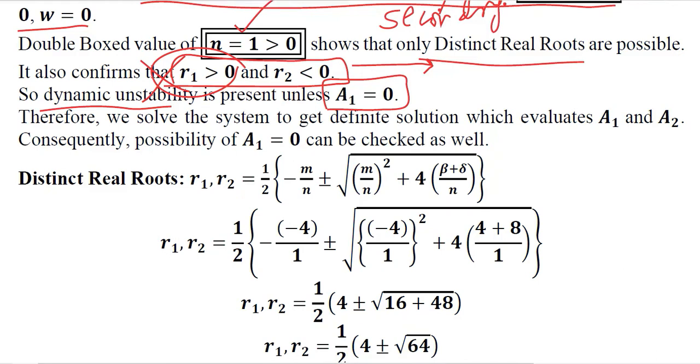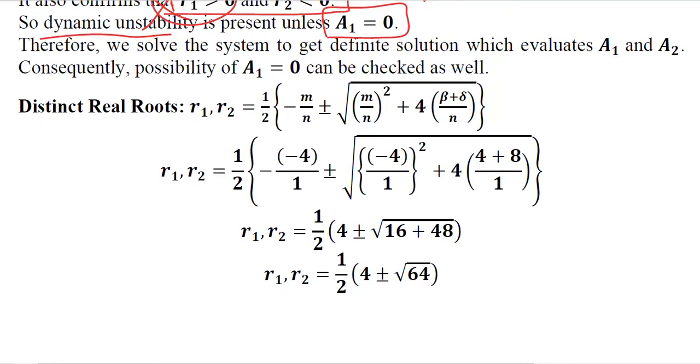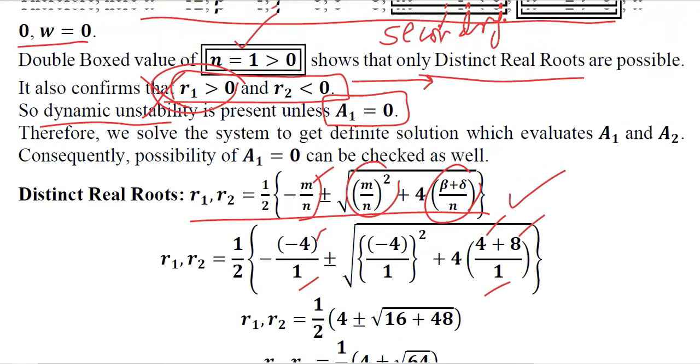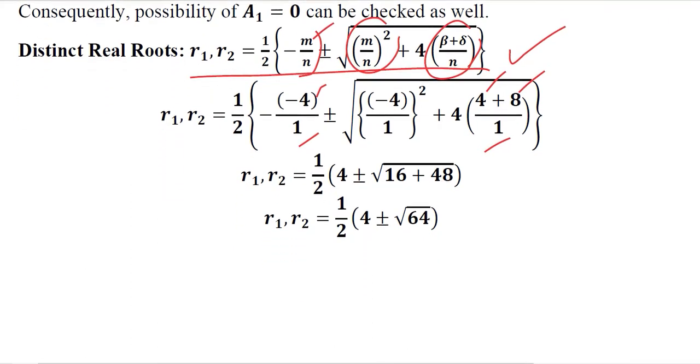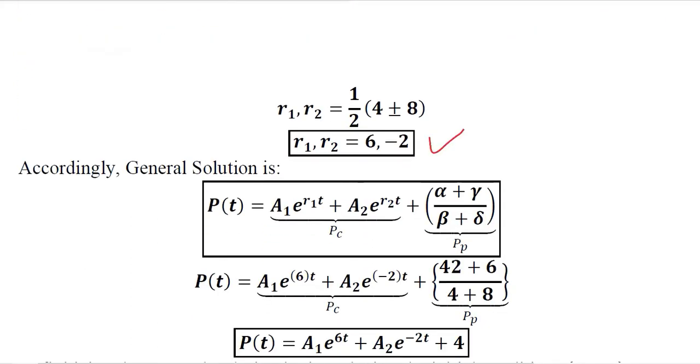Let us see how it is possible. For the distinct real root case, the roots are found using the same quadratic formula that we have learnt before. In the last video we saw that various values were substituted. So here we have the values of M and N, we have the value of beta, delta, and N. Putting all of these values that we just extracted, roots are found. As you can see, R1 is a positive value and R2 is a negative value, as we know that whenever N is positive this thing will happen.